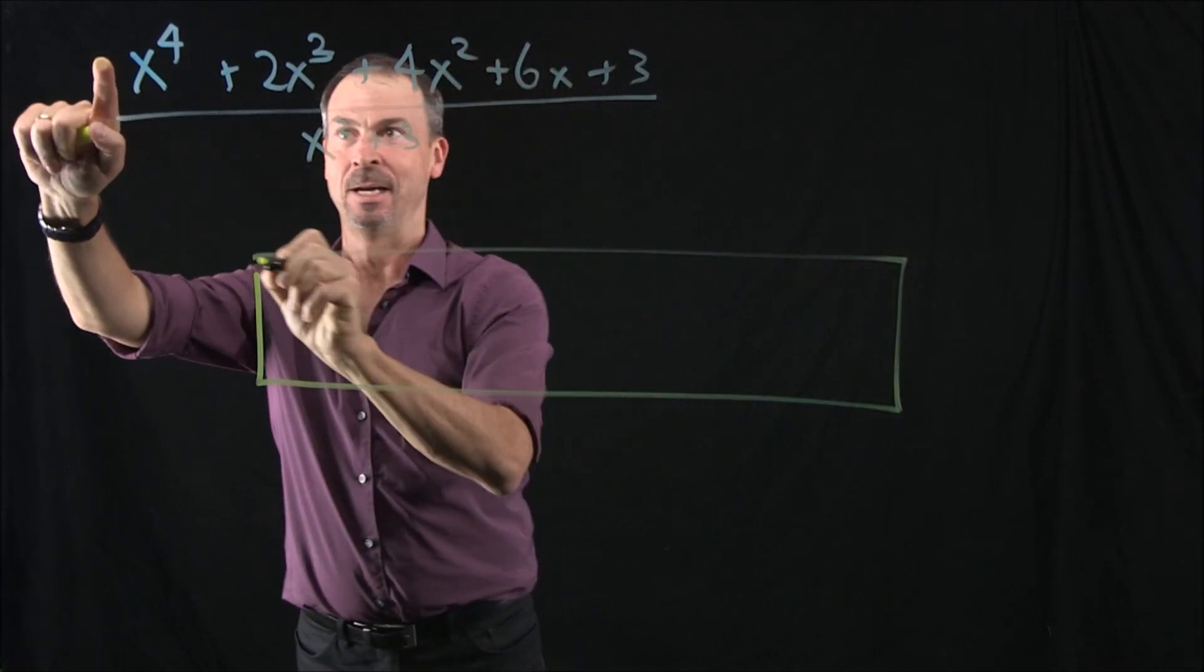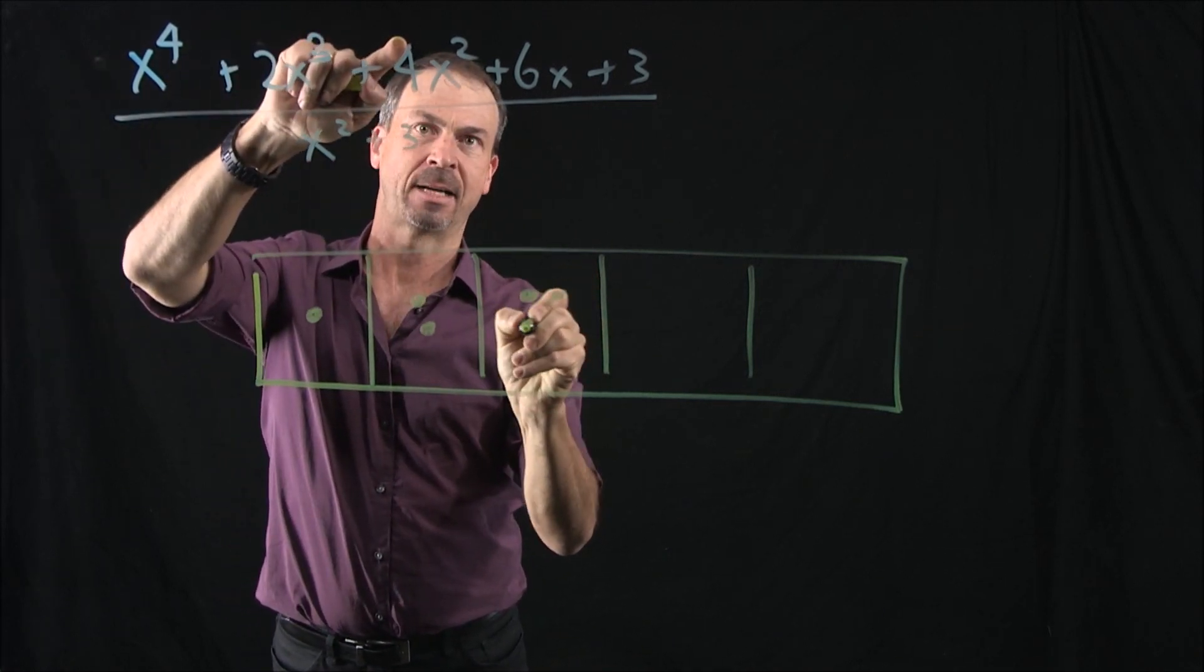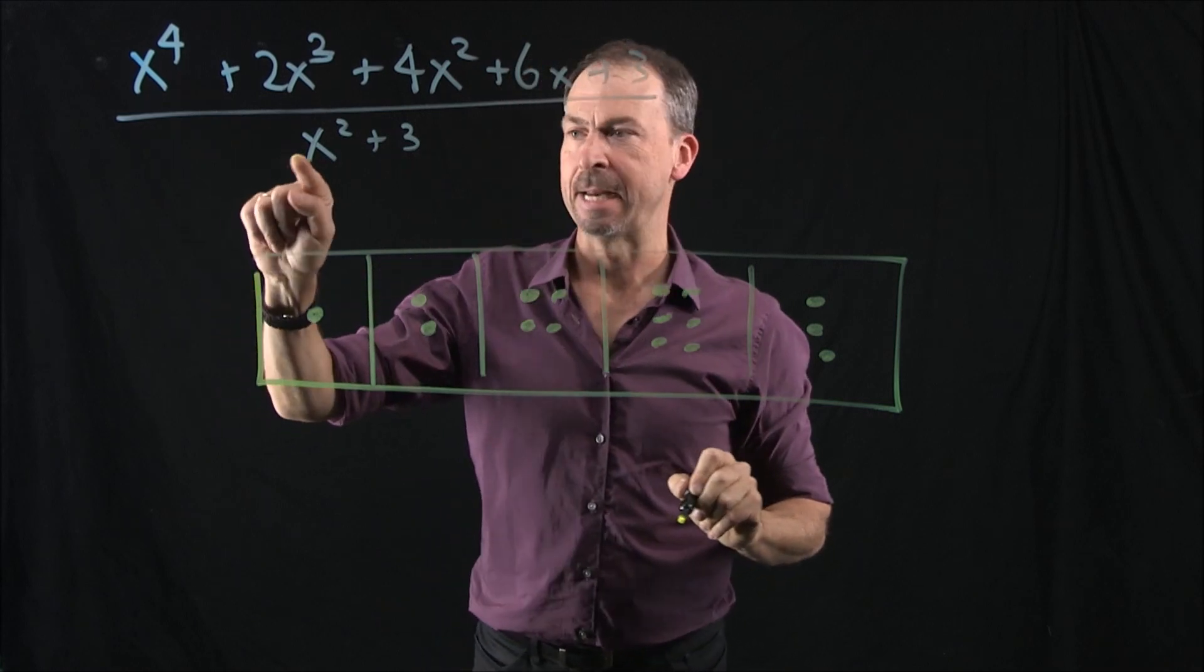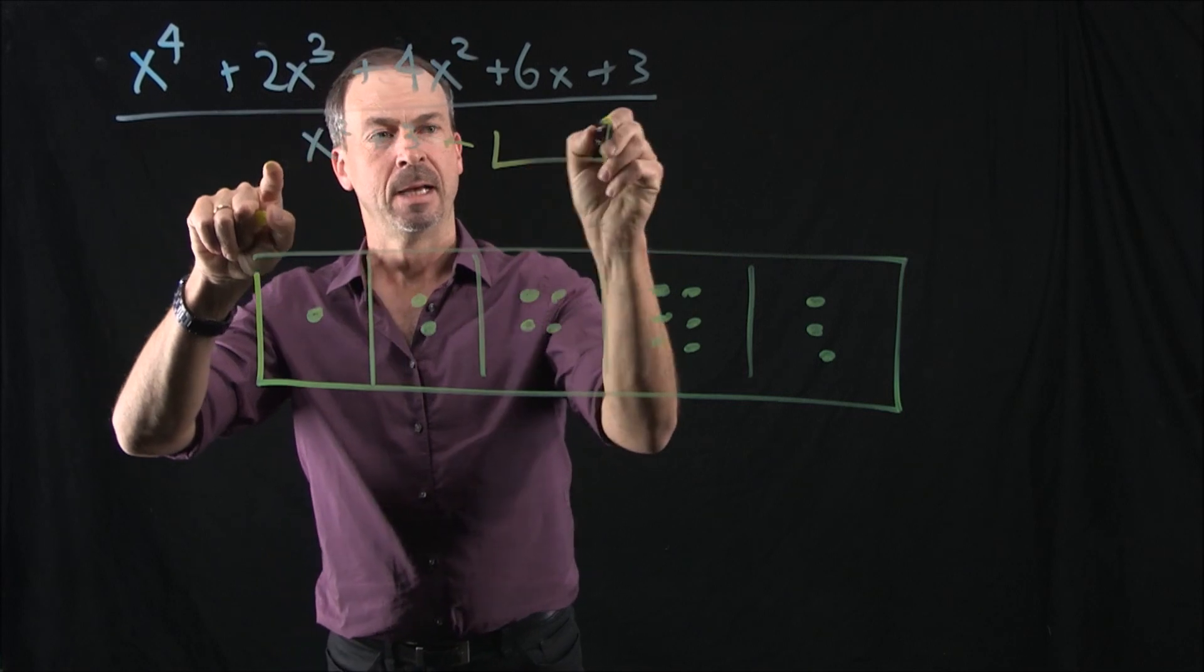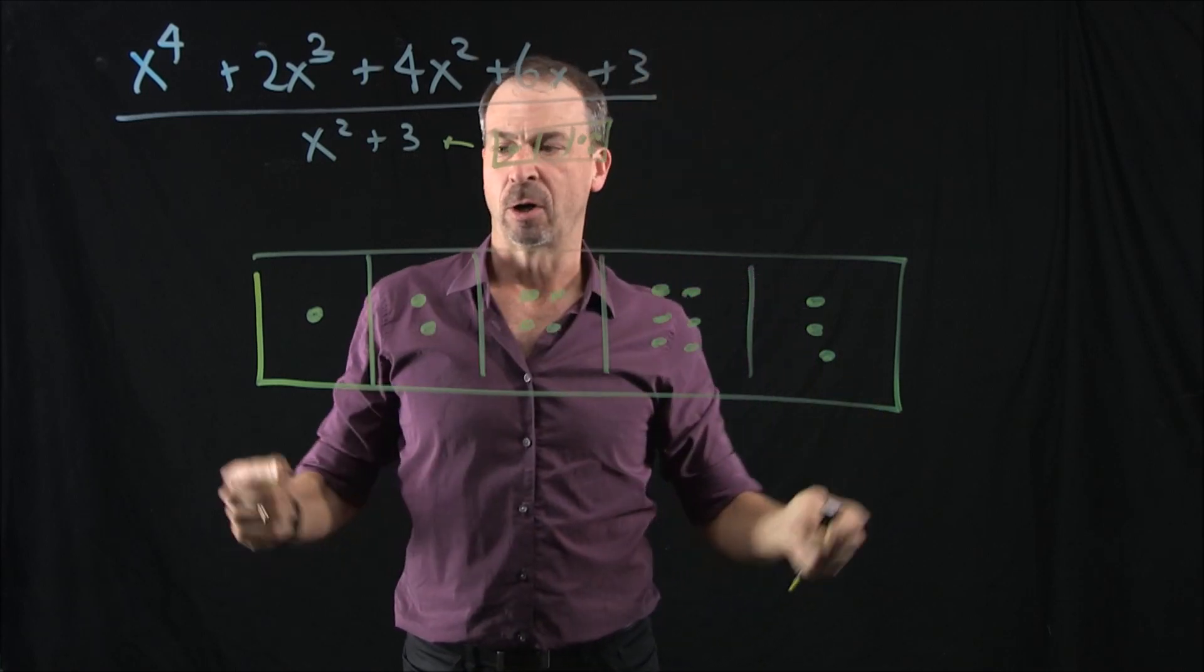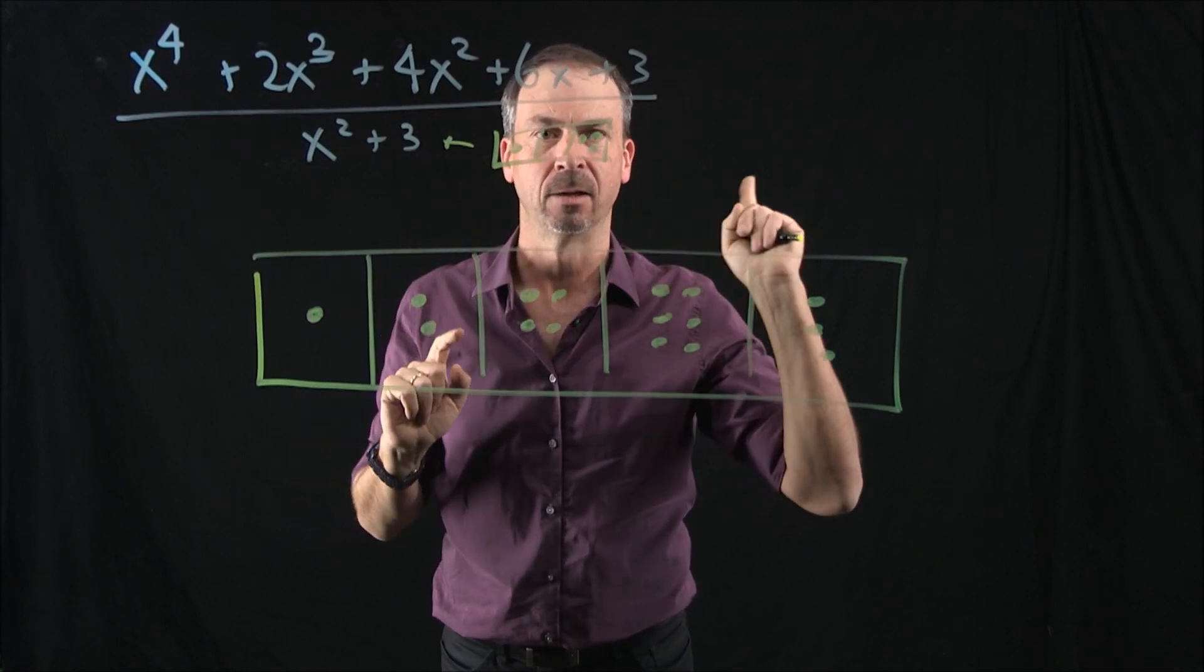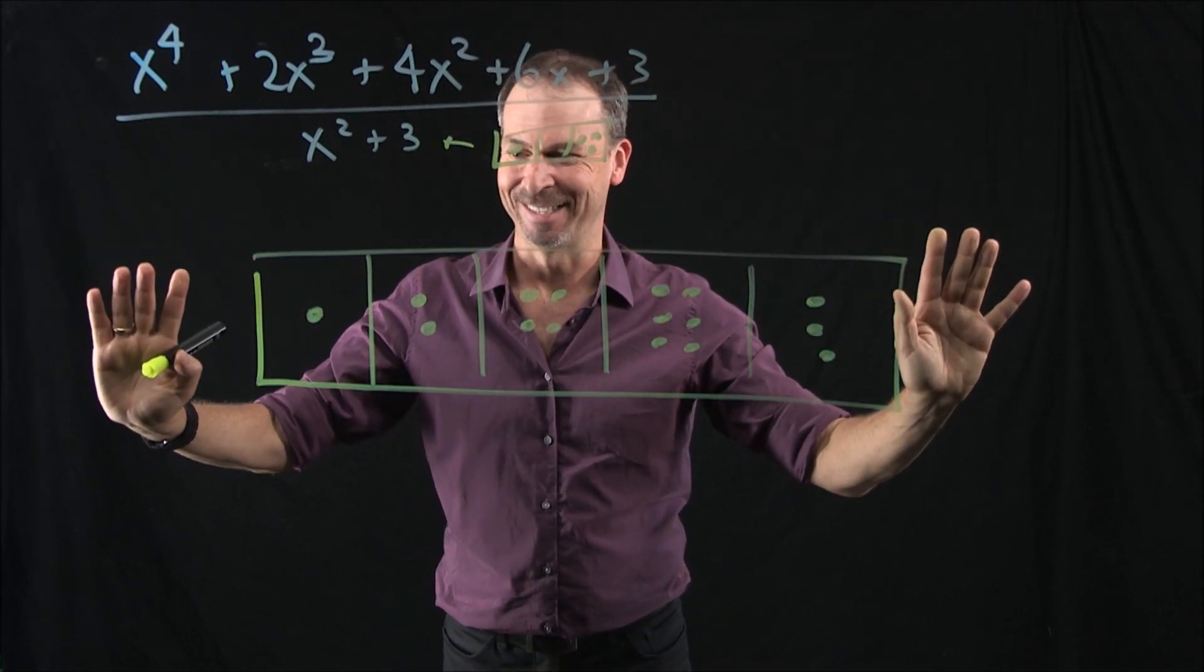Let me draw this problem. I want to do this top numerator, this great big number here. 1x to the 4th. 2x cubes. 4x squares. 6x's. And 3 ones. That's what the top line is. And I'm looking for groups of the bottom line, x squared plus 3. What does x squared plus 3 look like? It's going to be 1x squared, no x's, and 3 ones. So I'm really doing this division problem. I'm looking for these groups in that picture. 1 dot, no dots, 3 dots. So I'm looking for 1 blank 3 anywhere in this picture. Can I do it? I bet the answer is yes.